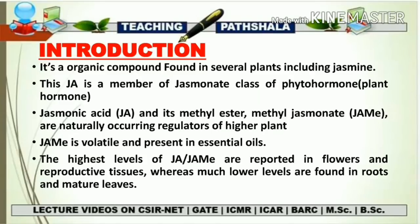Jasmonate induces senescence and promotes leaf abscission. At a concentration greater than 50 micromolar, Jasmonate induces senescence in plant cell culture, and this senescence response includes loss of chlorophyll and degradation of chloroplast proteins. The effect of Jasmonic Acid depends entirely on its concentration — at high concentration it inhibits certain growth processes, and at low concentration it shows different effects.